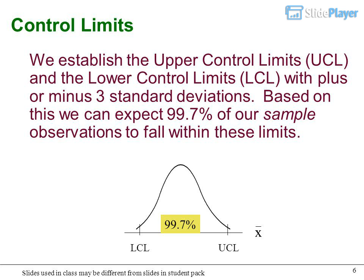Control limits: We establish the upper control limits UCL and the lower control limits LCL with plus or minus 3 standard deviations. Based on this, we can expect 99.7% of our sample observations to fall within these limits.